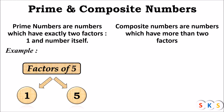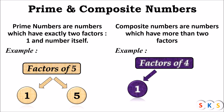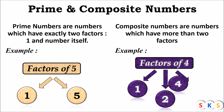What are composite numbers? Composite numbers are numbers which have more than two factors. Let's see an example. Here we have a number 4. Here 1 is one factor of 4, the second factor is 2, and the third factor is 4. So you can see that number 4 has 3 factors. If any number has more than two factors, such numbers are known as composite numbers. So here 4 is a composite number.